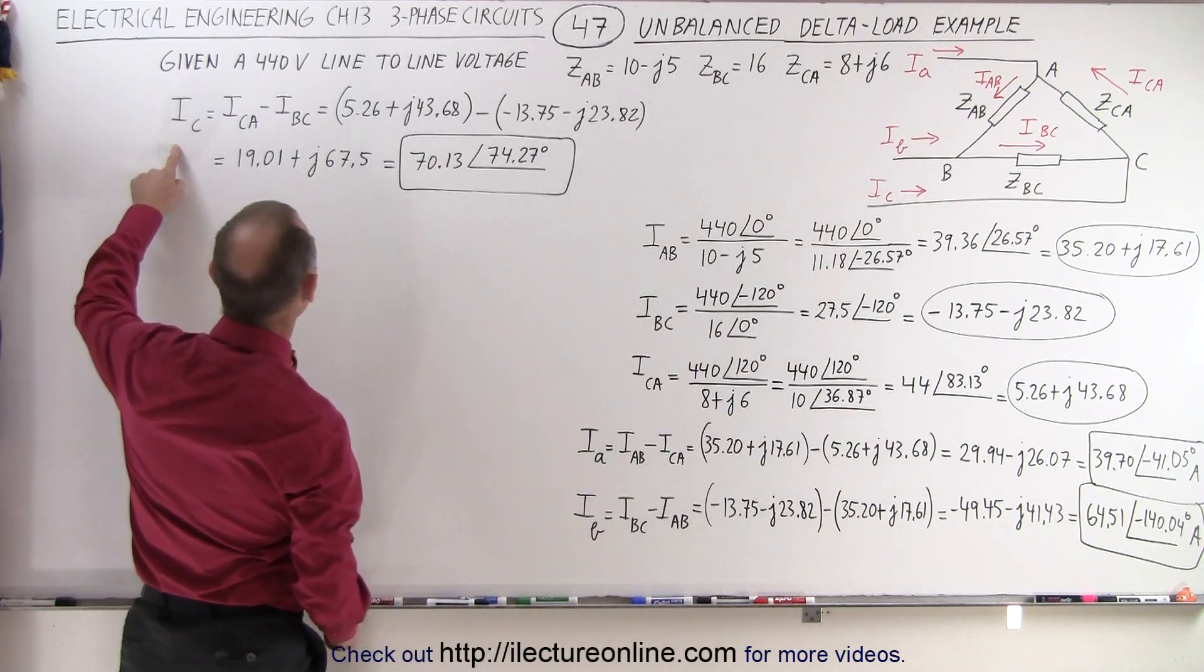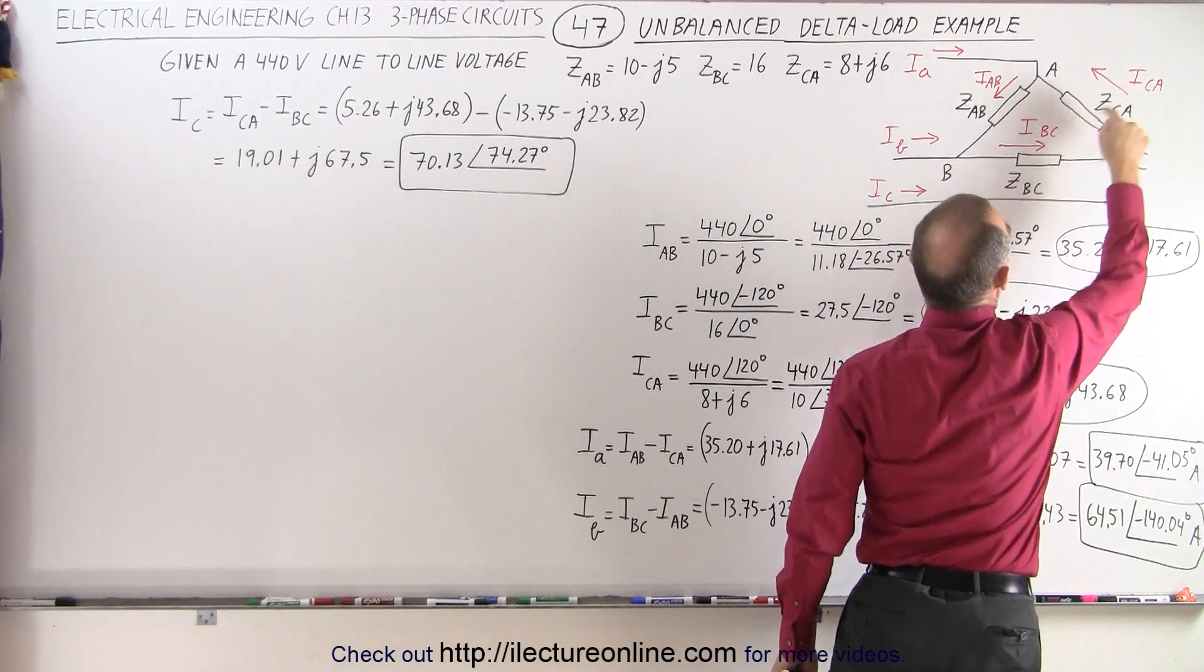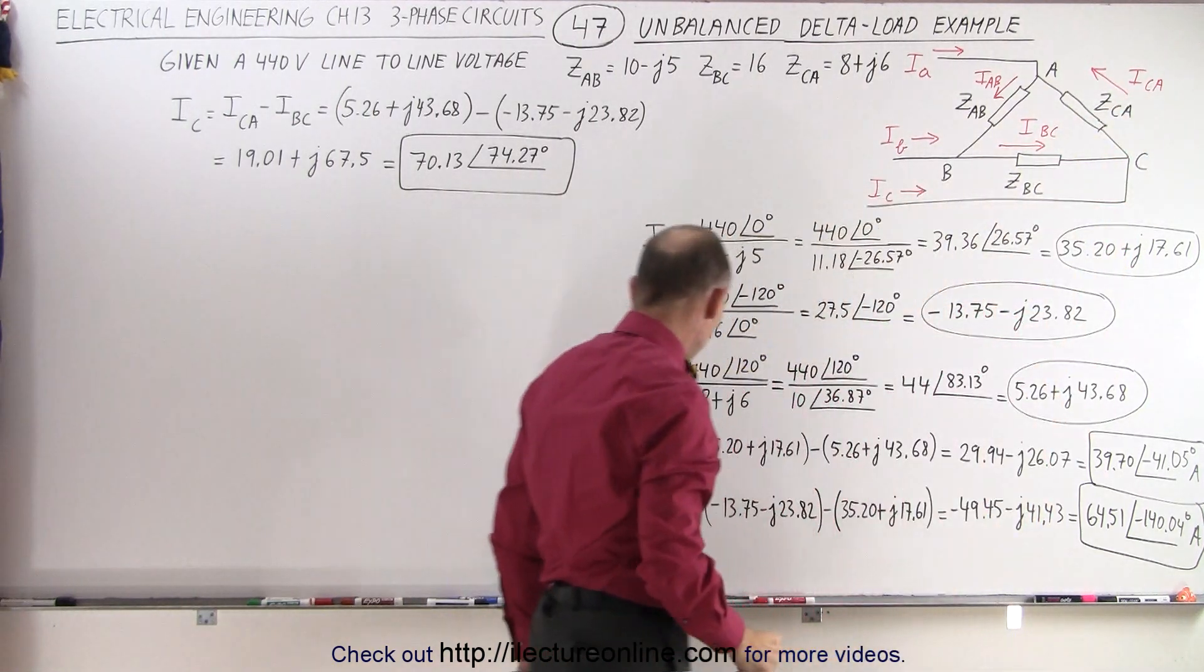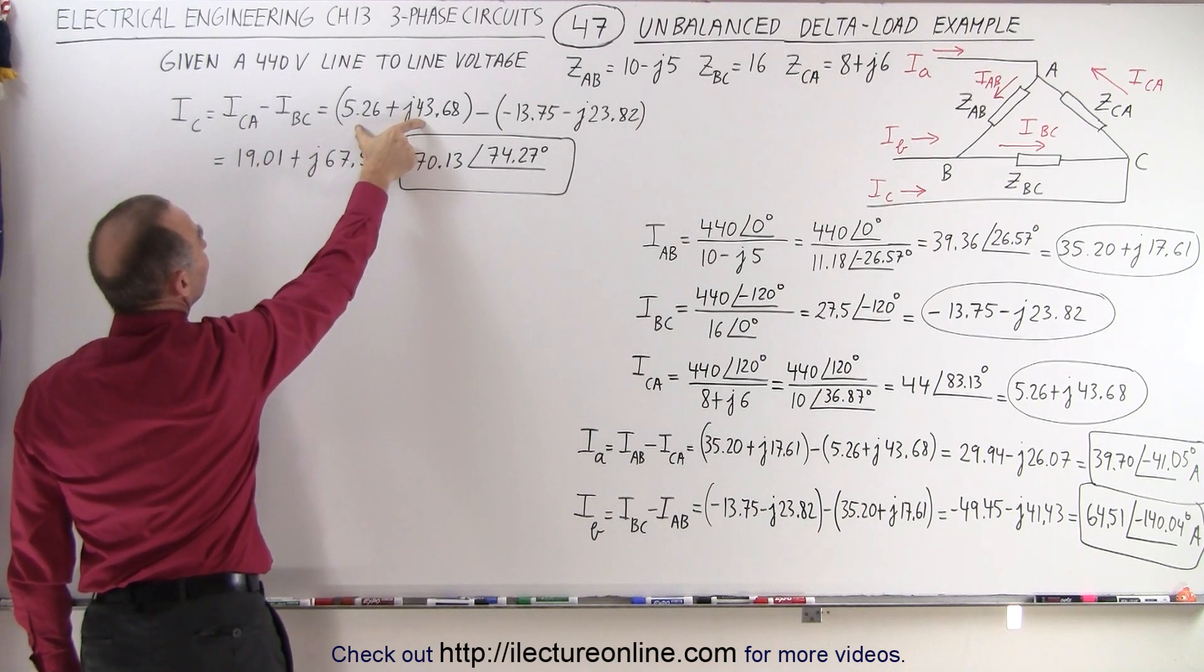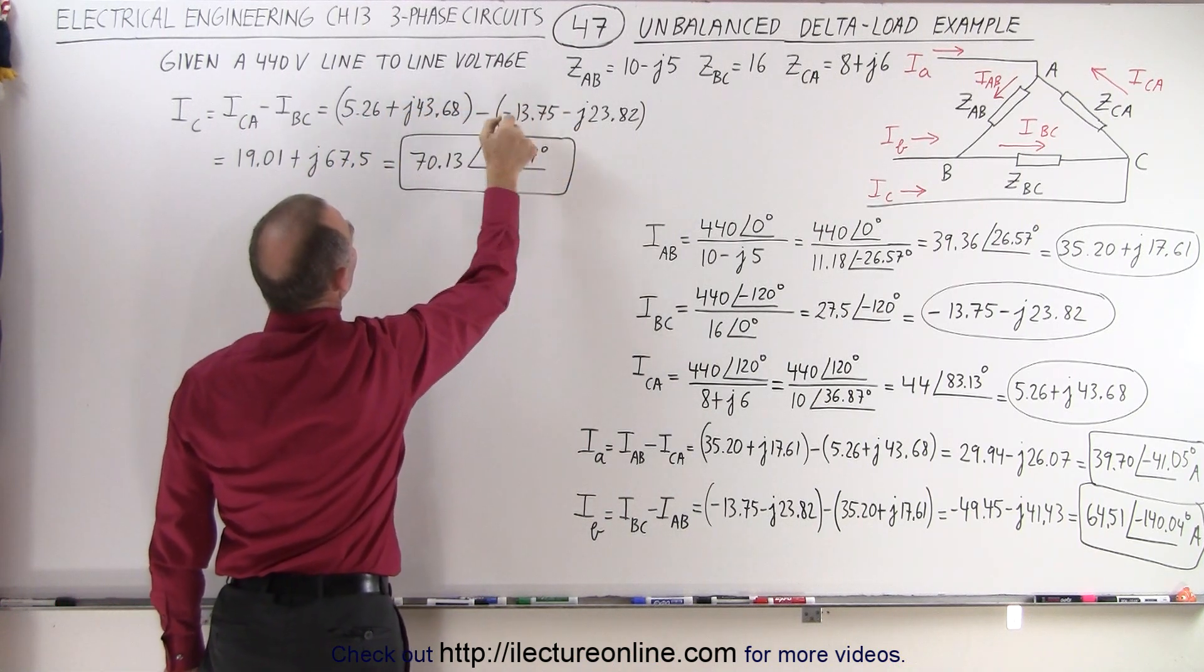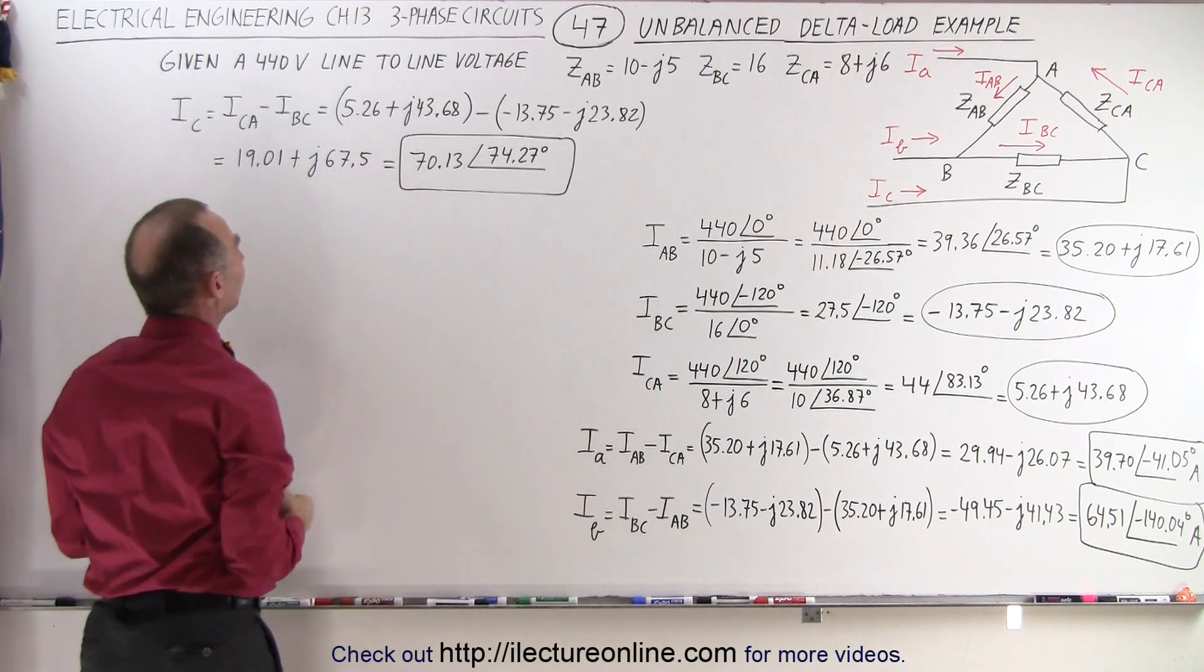For Ic, realizing that the current feeding point C right here is equal to Ica minus Ibc, so we end up with Ica minus Ibc. This is Ica, this is Ibc, subtract one from the other, we get this value, then we convert to magnitude and phase angle format.